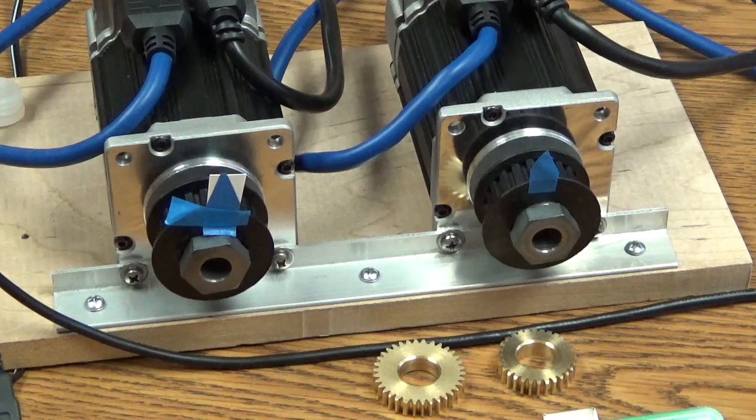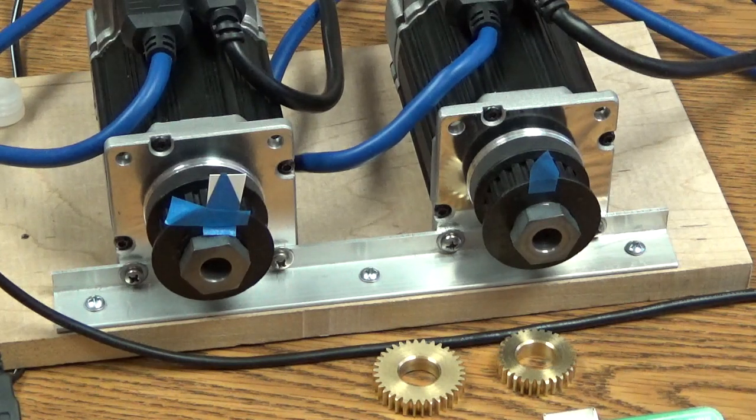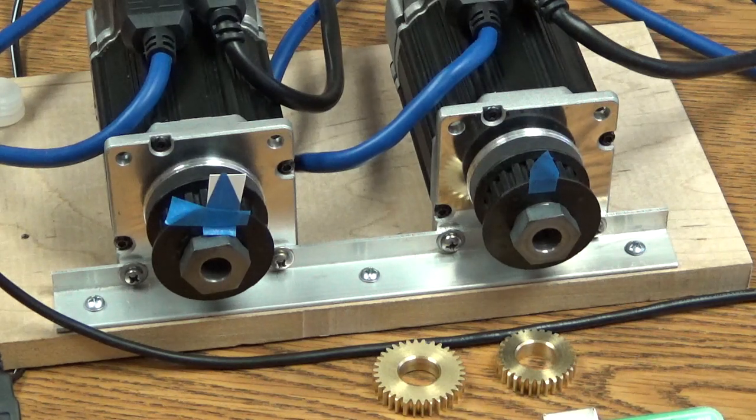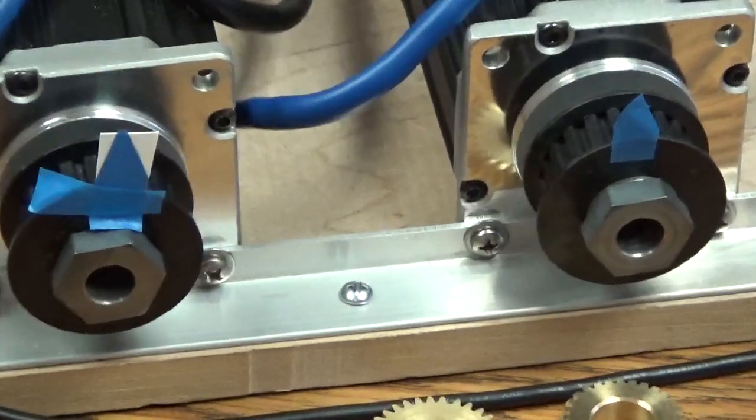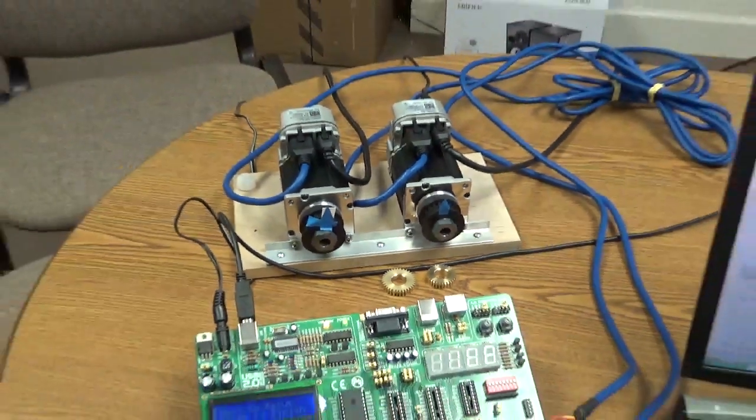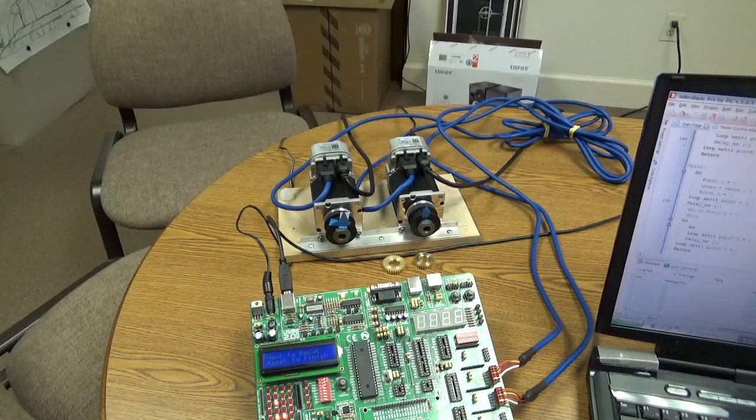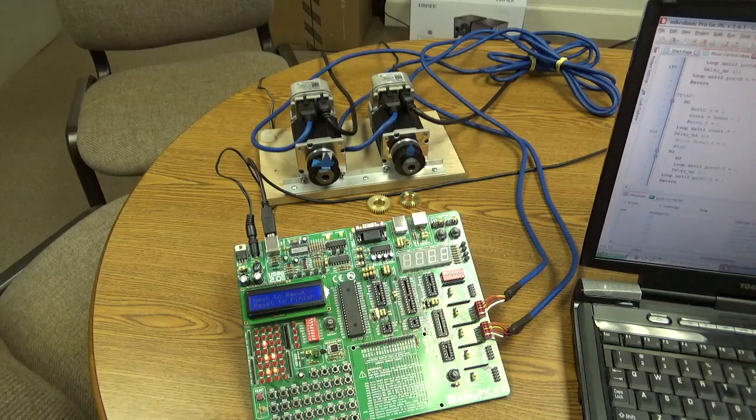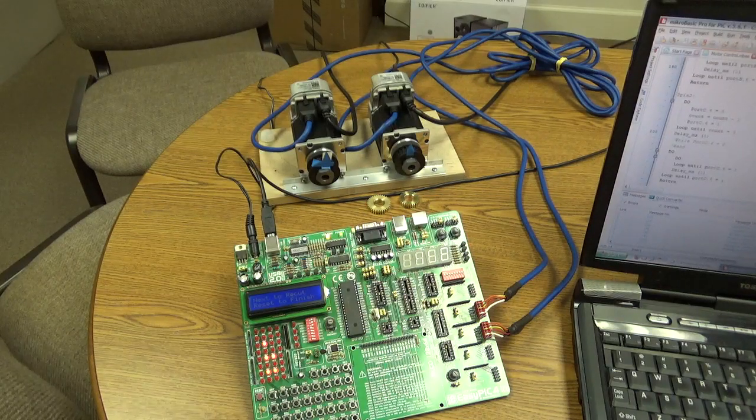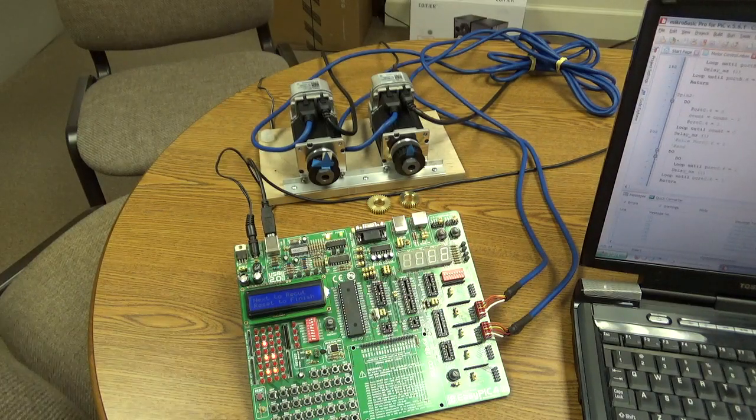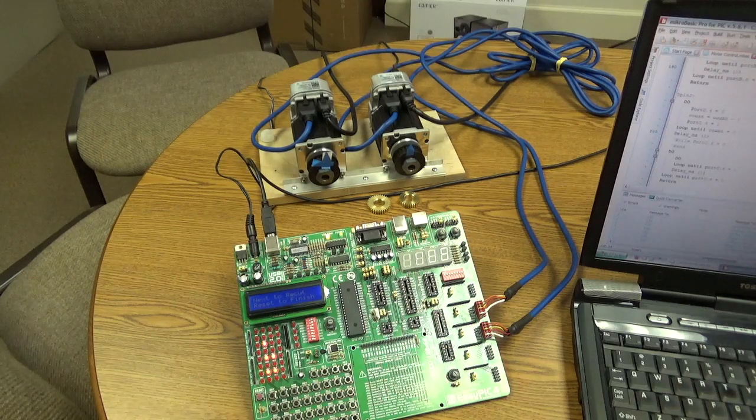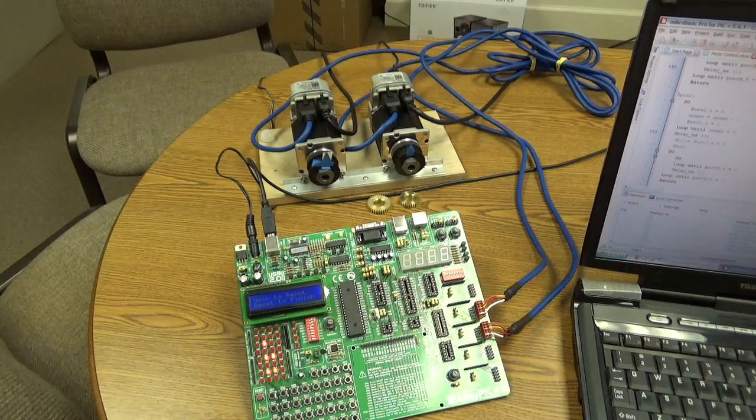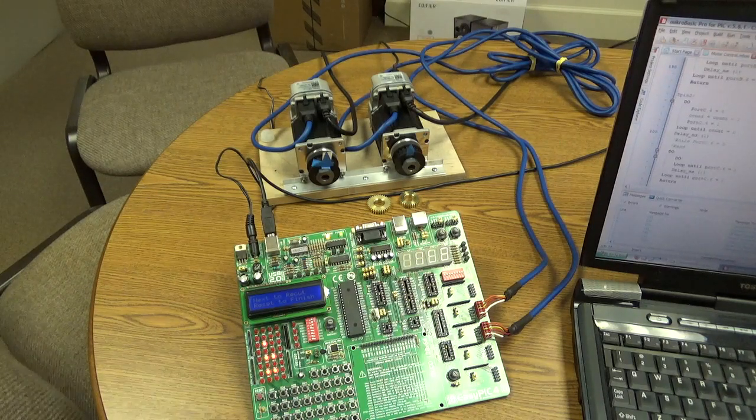I think the software is pretty well along. It's running fine on this board now, the EZ-PIC-4, but I have to make some modifications to make it work on the target board. I'll show you that in a few minutes, what board we're actually going to use for the machine. It'll be the same processor but just on a different board with not so many inputs and outputs that we don't really need.